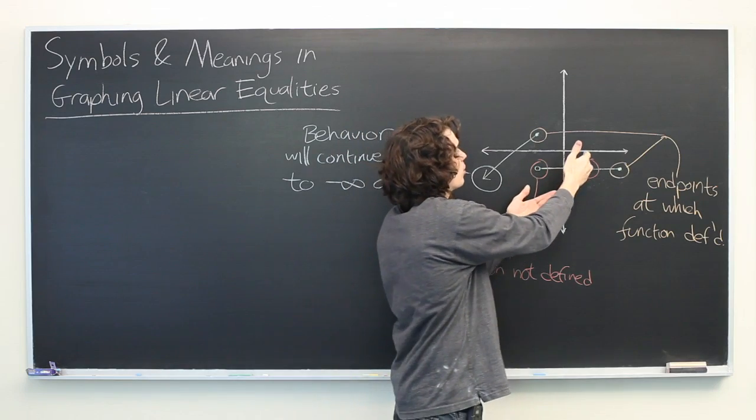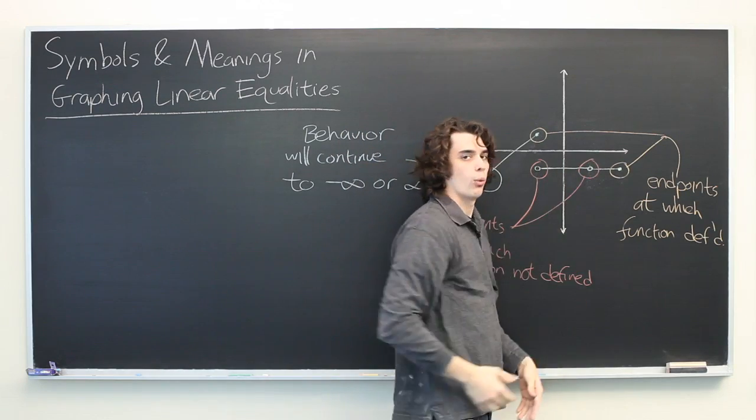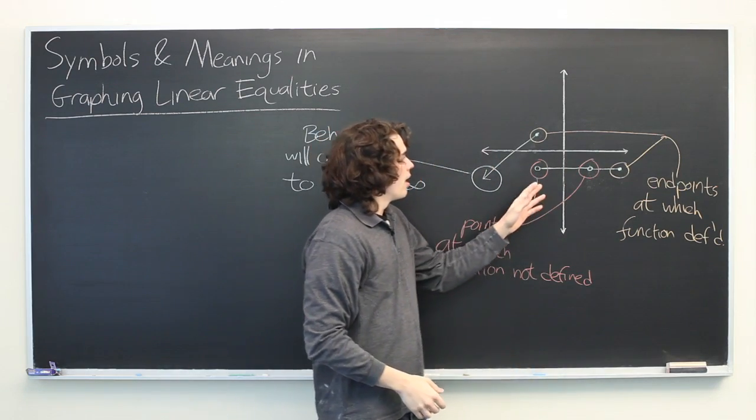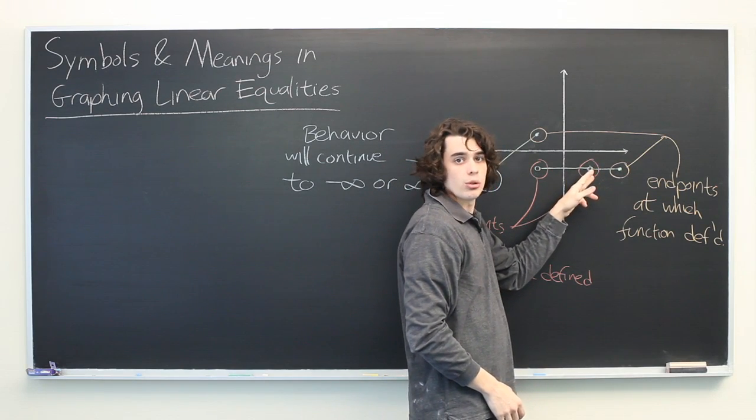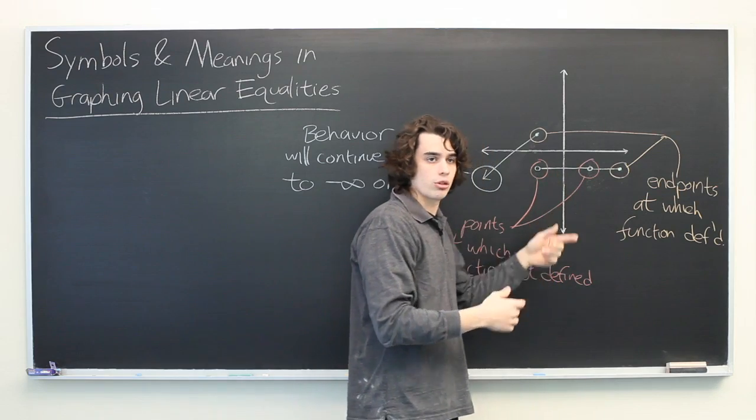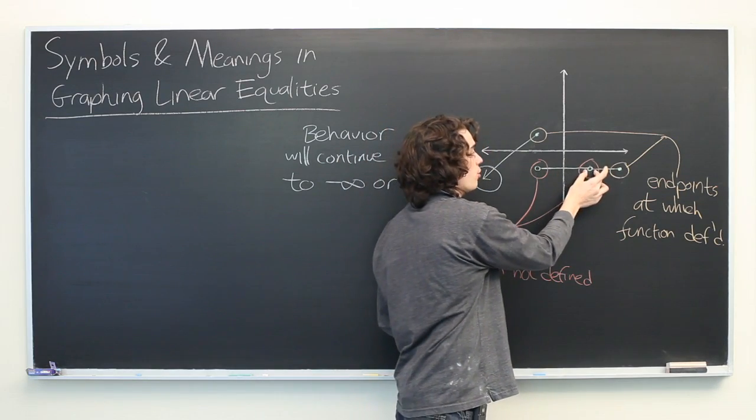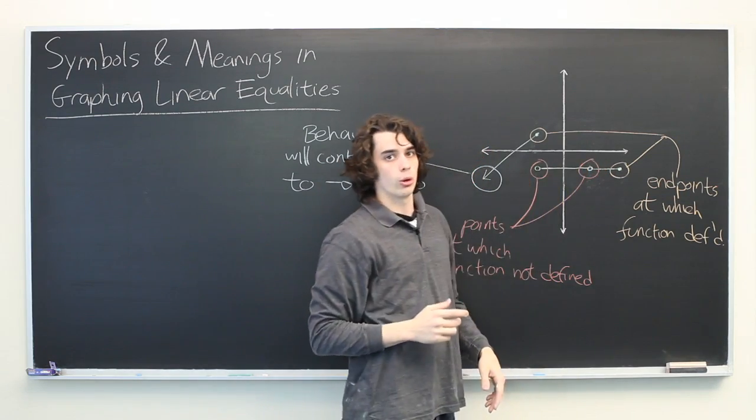So if this were at the point 1, 2 negative 1 for example, then this graph would be defined for 2.1, 2.001, 2.00001. But as soon as you get to 2, the function is no longer defined.